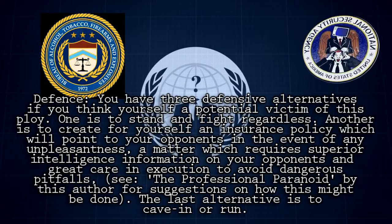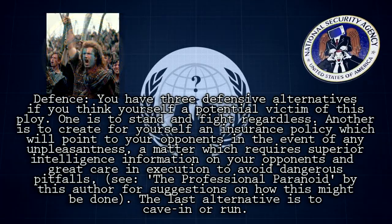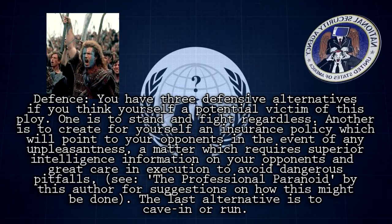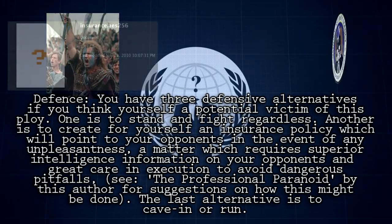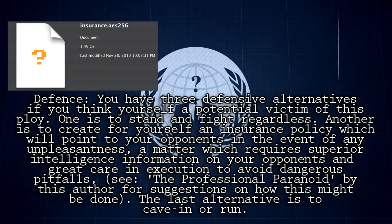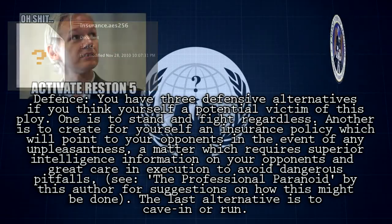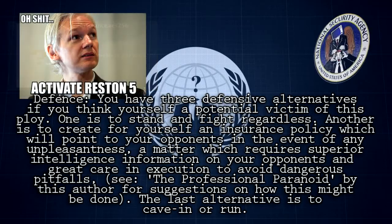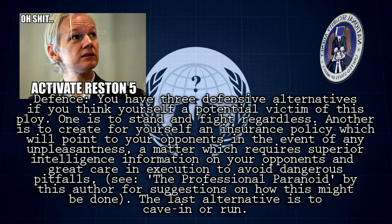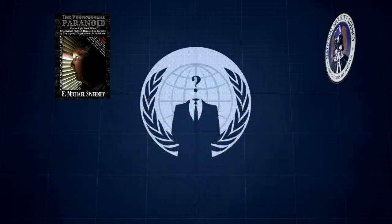Defense: You have three defensive alternatives if you think yourself a potential victim of this ploy. One is to stand and fight regardless. Another is to create for yourself an insurance policy which will point to your opponents in the event of any unpleasantness — a matter which requires superior intelligence information on your opponents and great care in execution to avoid dangerous pitfalls. See 'The Professional Paranoid' by this author for suggestions. The last alternative is to cave in or run.